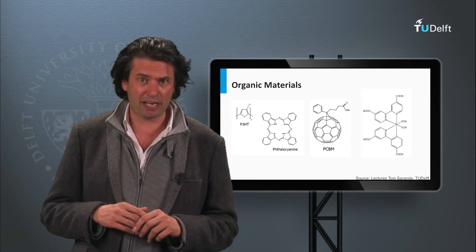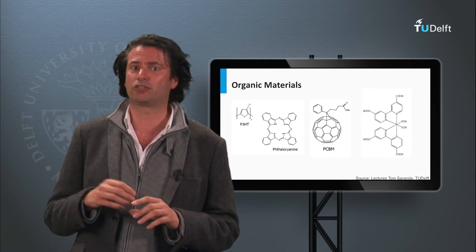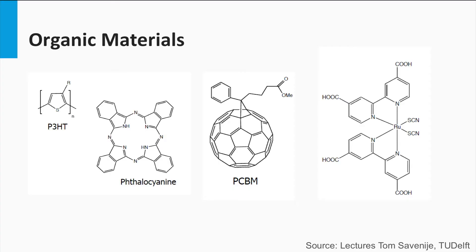The carbon may form cyclic or acyclic linear or mixed compound structures. Here we have some examples of organic materials used for PV applications, like P3HT, phthalocyanine, PCBM, and ruthenium dye N3.